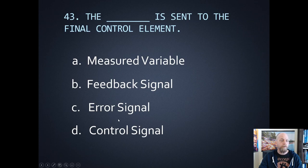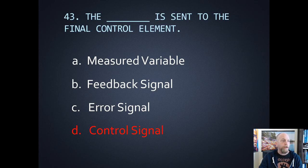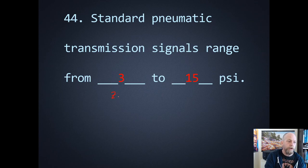Now completion questions. Which one is sent to the final control element? The final control element is the actuator out in the field — the valve, the motor, or the heater. The control signal is the one that was sent out to the field. Number forty-four: standard pneumatic transmission signals — that is the air signal sent to a larger valve to open and close it — the range there was 3 to 15 psi, with 3 corresponding to the zero and 15 corresponding to the span.